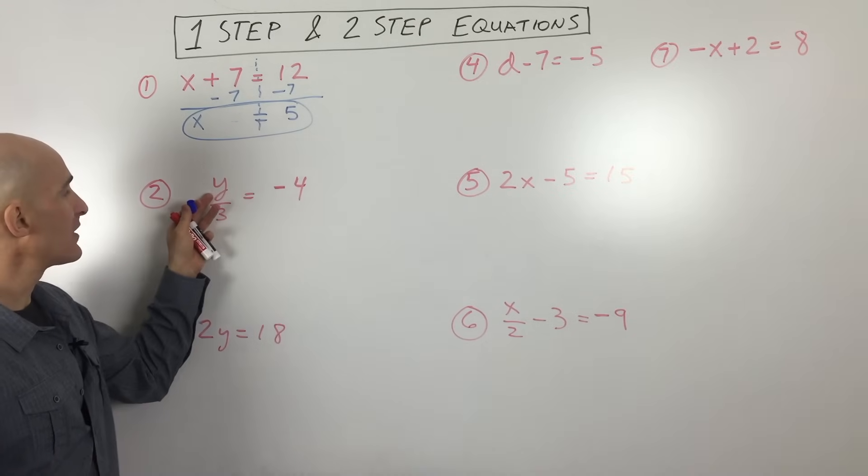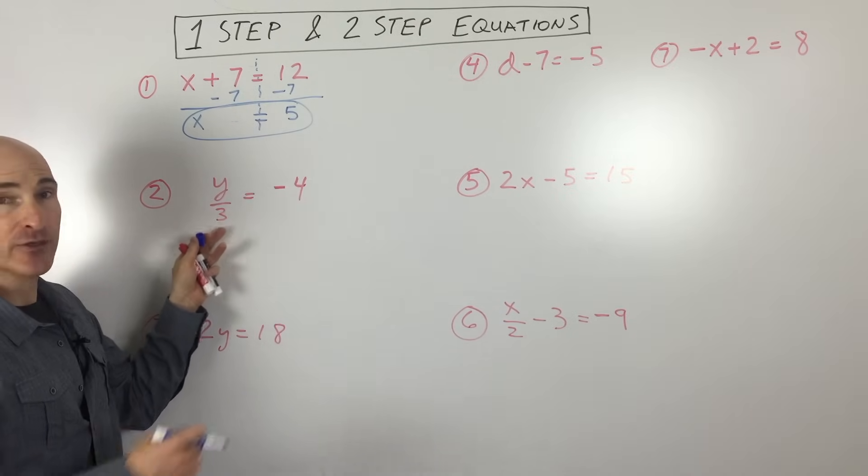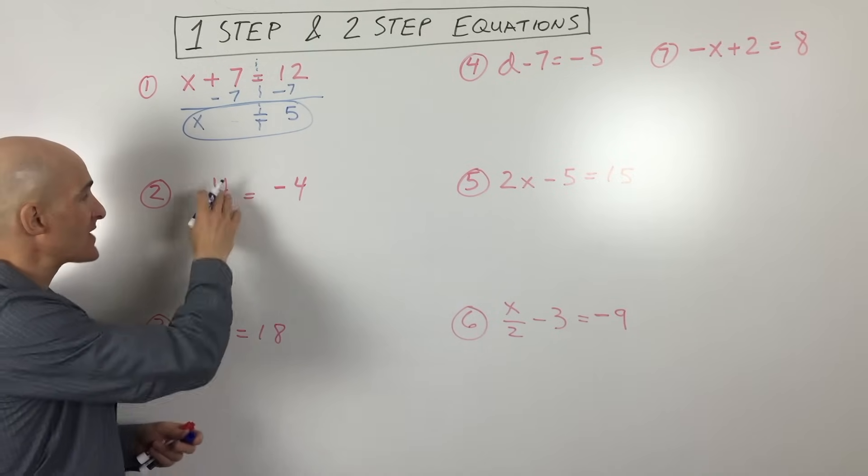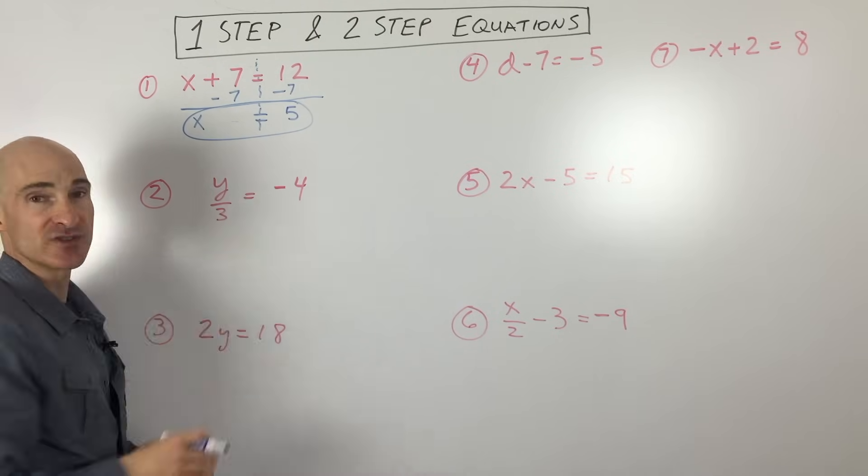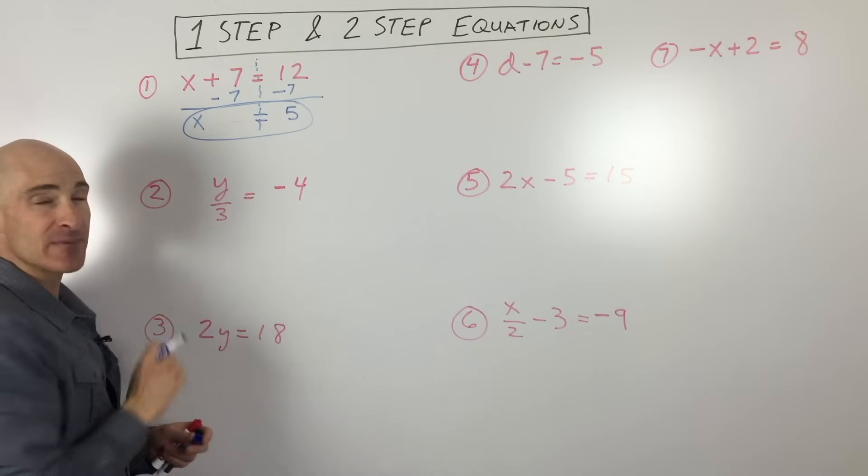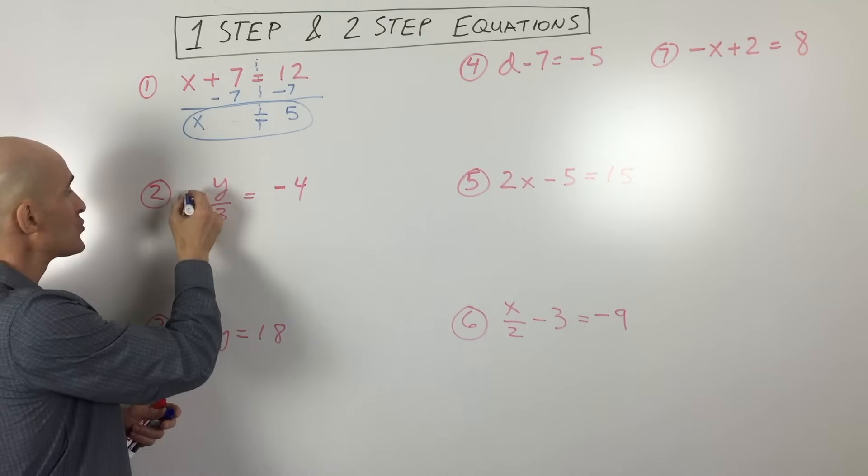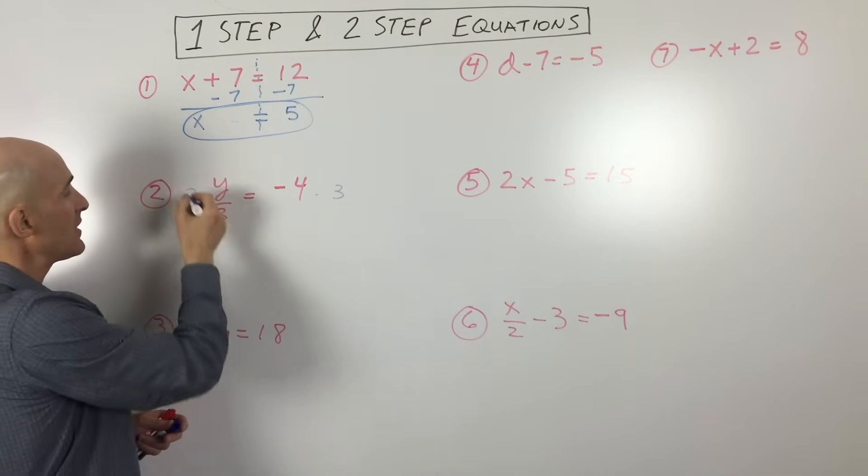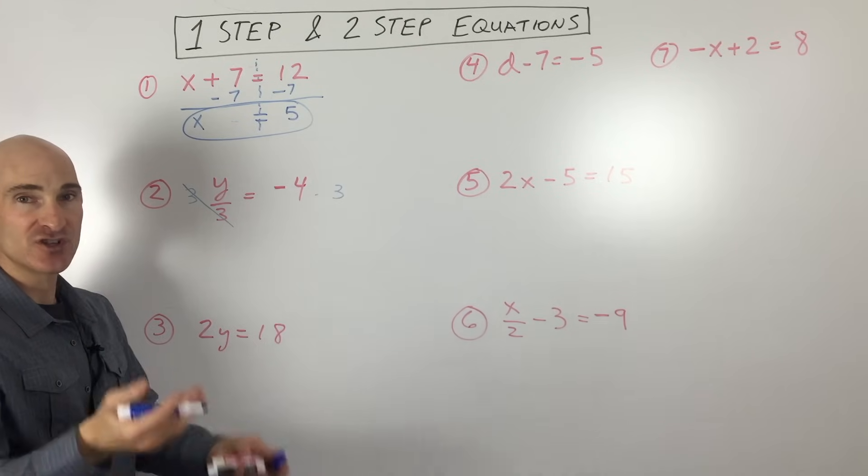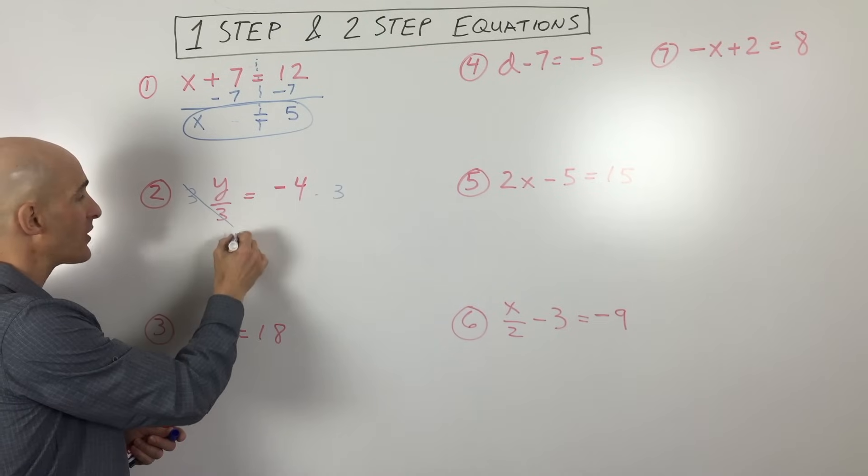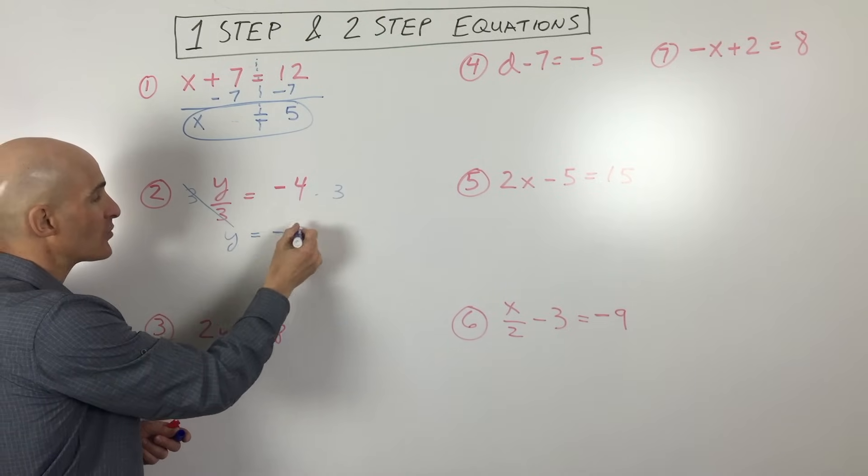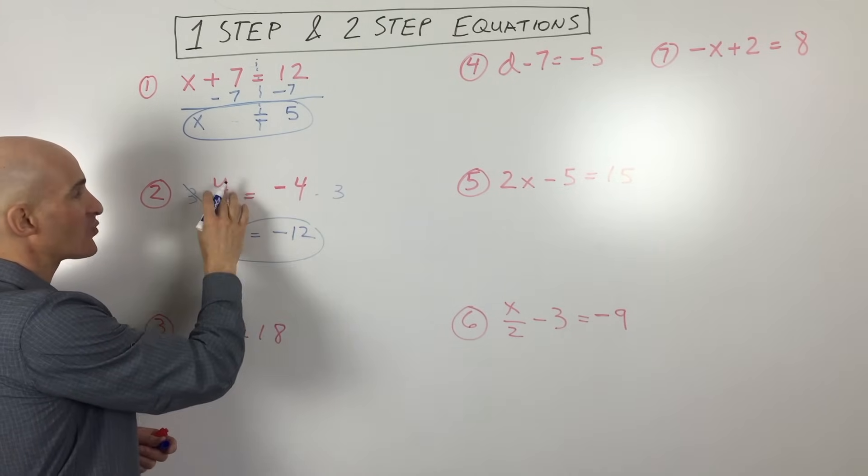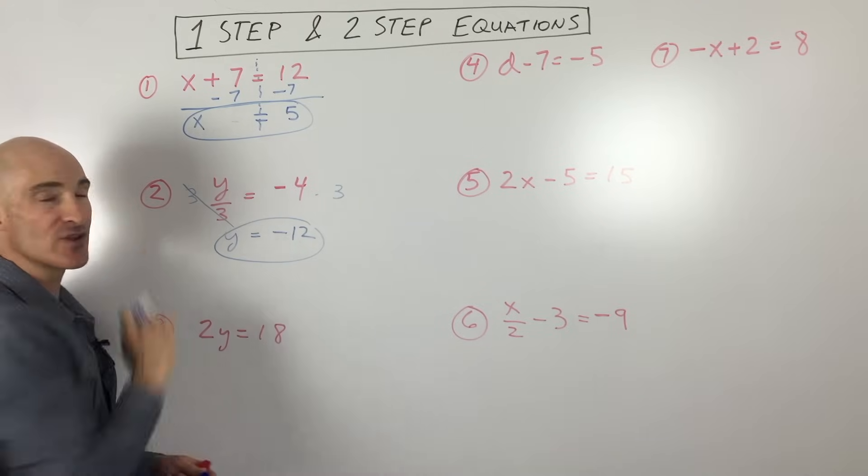So let's go into another example. Here we have y divided by 3. So when you see that fraction bar, that's just like division. That's like divided by. So y is divided by 3, and that equals negative 4. So what's the opposite of dividing? Multiplying. So we're going to multiply both sides by 3. And you can see those 3s are going to cancel, because multiplying and division are opposites. They cancel one another out. And so now you can see you have y equals negative 12. And that's it. If you want to check your work, you can put negative 12 back in. Negative 12 divided by 3 is negative 4.